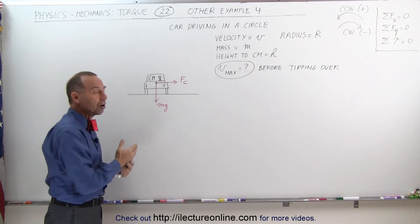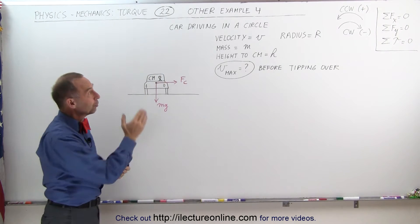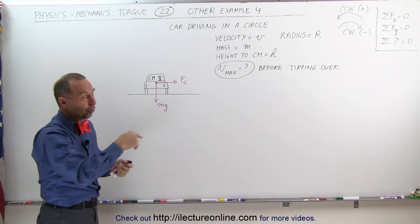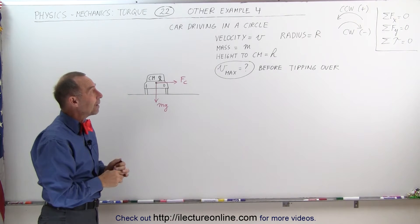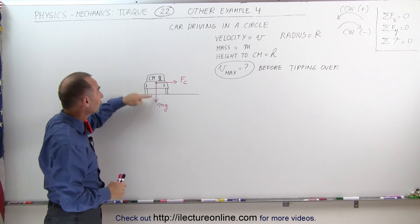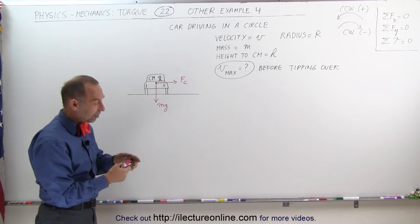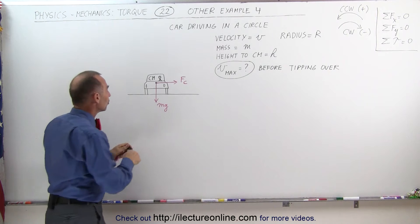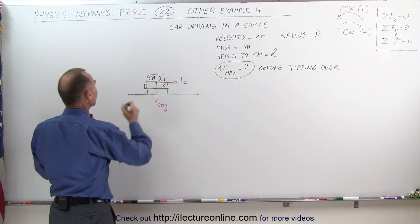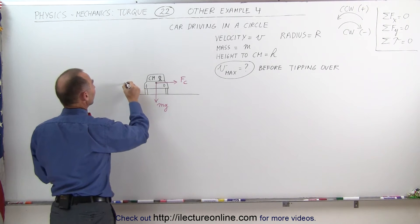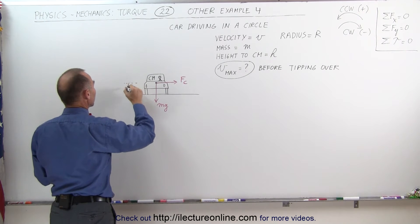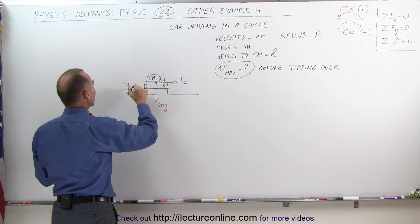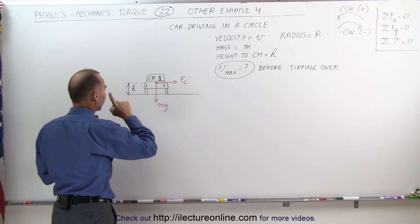Assuming that the velocity of the car is v, the radius of the turn is r, the mass of the car is m, and the height of the center of mass is equal to h. That means that the distance from the center of mass to the ground is equal to h.